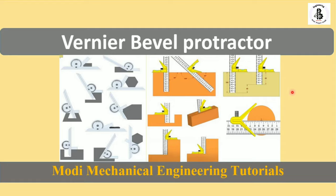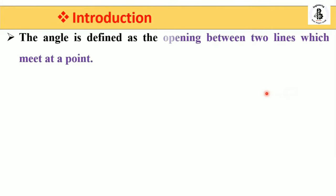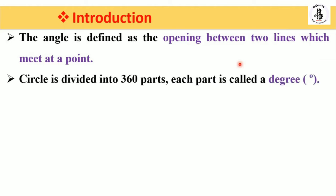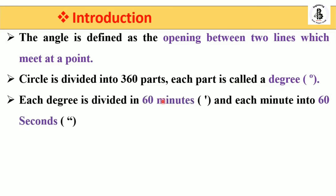Let us start with the basic introduction about the bevel protractor. As we are discussing, it is used for measuring an angle. An angle is defined as the opening between two lines which meet at a single point. The circle, as you already know, is divided into 360 parts or 360 degrees, and each part is measured as one degree.